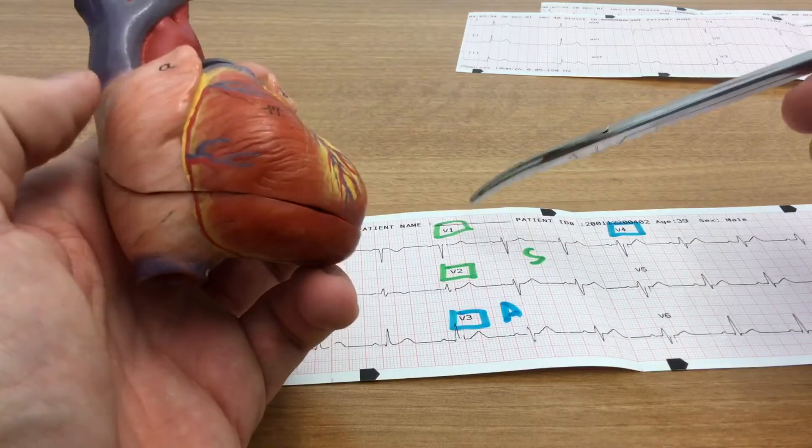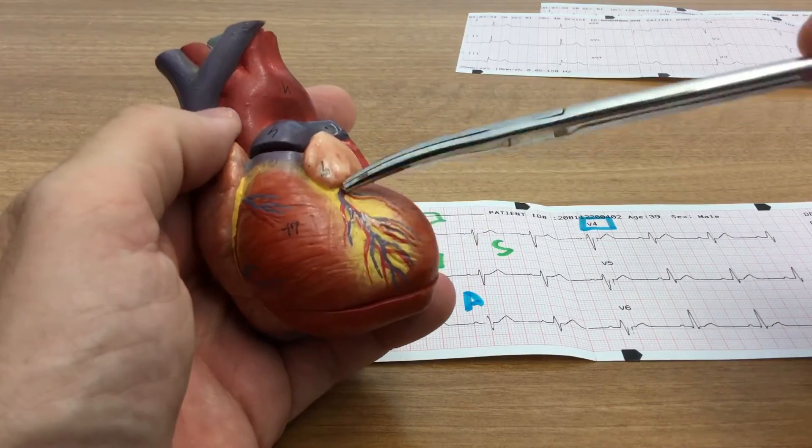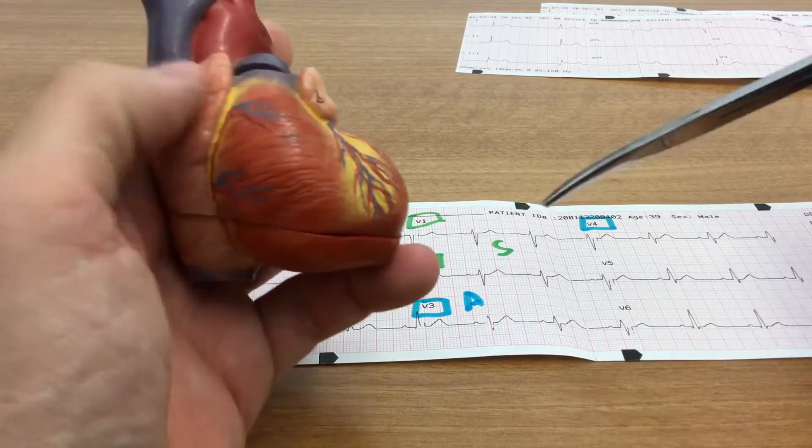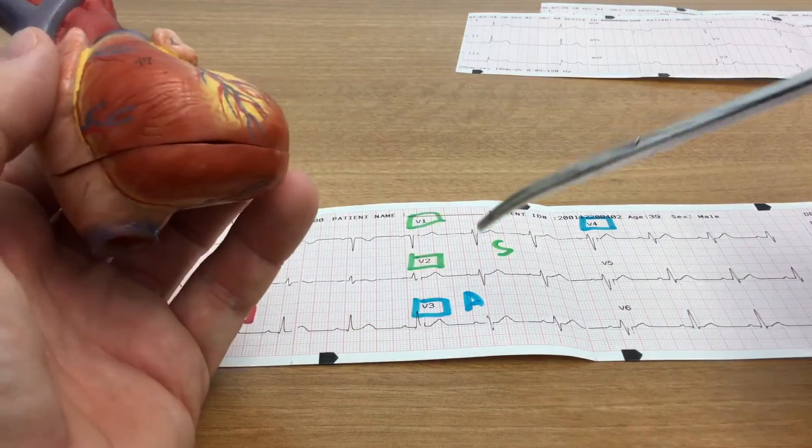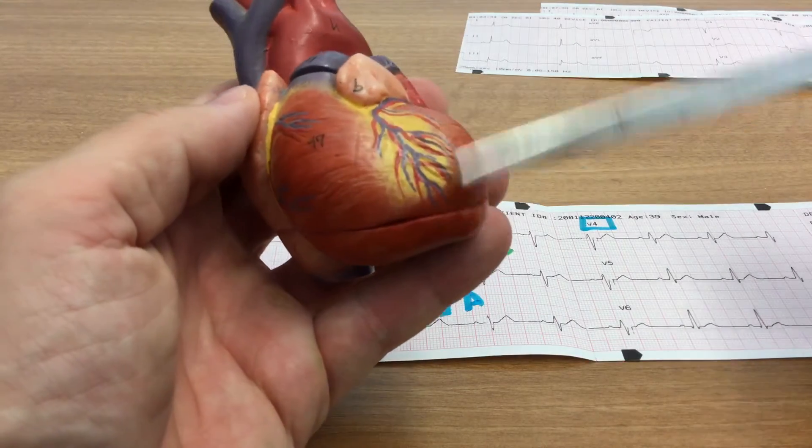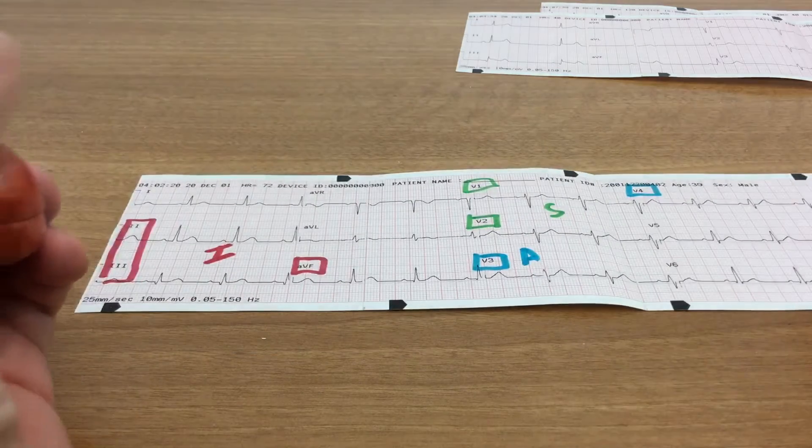And then A, V3 and V4 is the anterior wall of the left ventricle. So that's going to be the remainder of the LAD. So really, V1 through V4 all look at the LAD, but the first part of your V leads, V1 and V2, focus on the septal wall, whereas V3 and V4 are more the anterior part of the left ventricle.